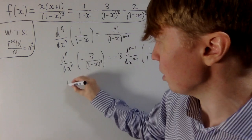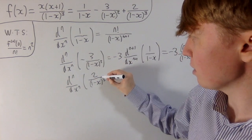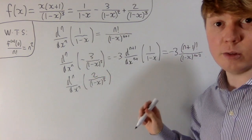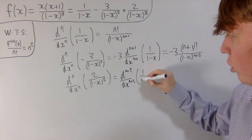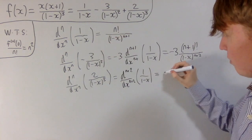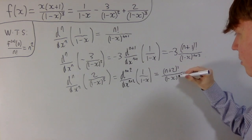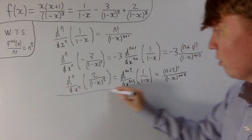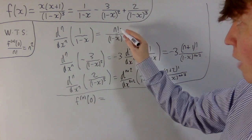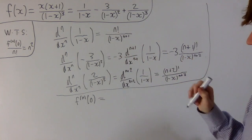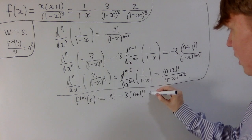We'll do the same for the third term, differentiating n times. Here 2/(1-x)³ is actually the second derivative of 1/(1-x), so differentiating it a further n times is equivalent to taking the (n+2)th derivative of 1/(1-x). Using our formula with n increased by 2, you get 2·(n+2)!/(1-x)^(n+3). Adding all three terms to find the nth derivative of f at 0 — with all denominators equal to 1 — gives n! minus 3·(n+1)! plus 2·(n+2)!.